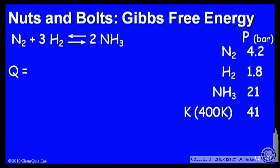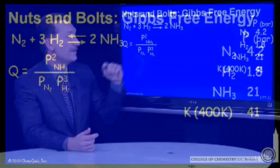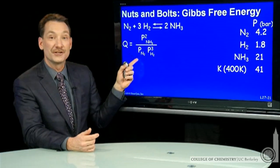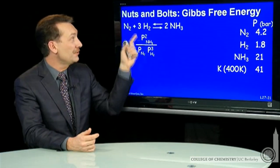The reaction quotient is given by the product concentrations over the reactant concentrations raised to their stoichiometric powers. So the partial pressure of NH3 squared, the partial pressure of nitrogen, and the partial pressure of hydrogen cubed.